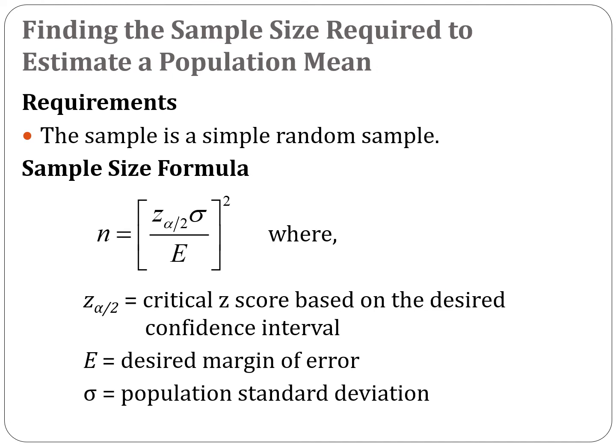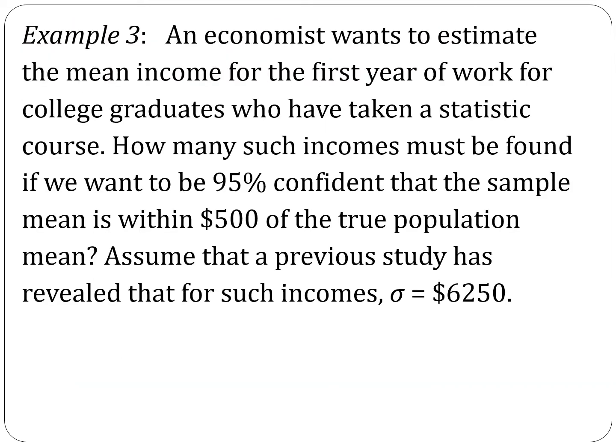Sometimes we'll be asked to work backwards and find a sample size required to get a desired margin of error. We'll need three things: a critical Z-score for whatever confidence level we're working with — for example, 95% — the margin of error we're looking to achieve, and the standard deviation of the population.